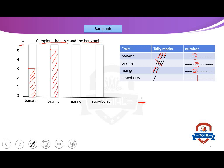Mango — mango equals what number? Equal two. So we go up to two. Where is two? Two is here. We put a line and color all of it. And strawberry? Only one. Where is one? Excellent — one is here. We color all of it.